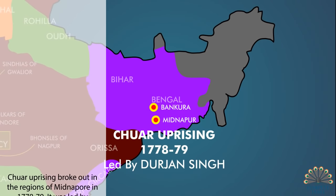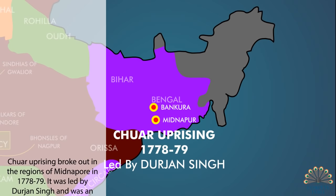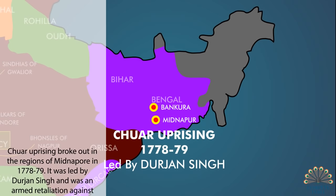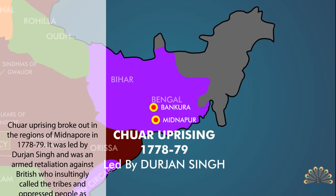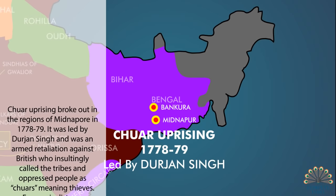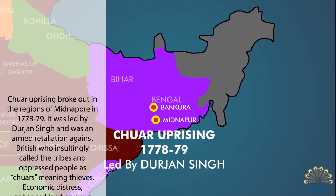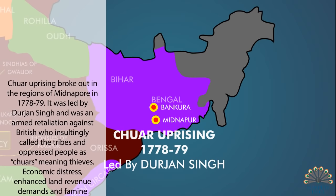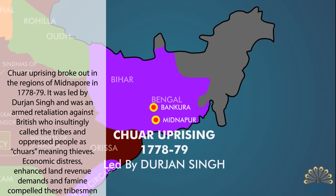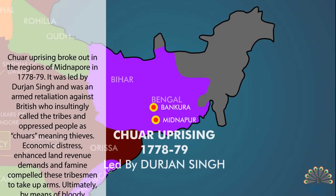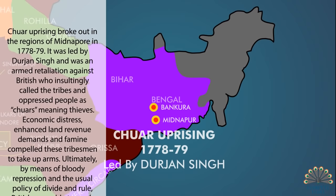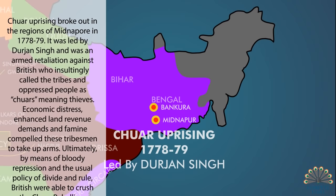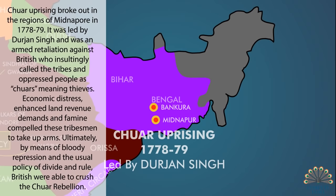The Chor uprising broke out in the regions of Midnapur in 1778-79. It was led by Durjan Singh and was an armed retaliation against the British, who insultingly called the tribes and oppressed peoples 'Chors', meaning thieves. Economic distress, enhanced land revenue demands and famine compelled these tribesmen to take up arms. Ultimately, by means of bloody repression and the usual policy of divide and rule, the British were able to crush the Chor rebellion.